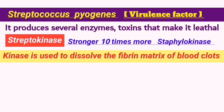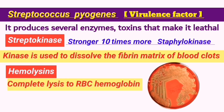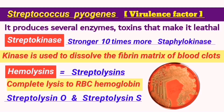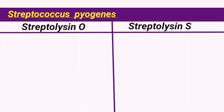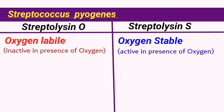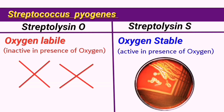S. pyogenes also resembles Staph aureus in producing haemolysins which break down erythrocytes and appear as clear zones surrounding the areas of colony growth on blood agar. S. pyogenes also produces other lysins known as streptolysins which can break down other cells as well as red blood cells. There are two distinct types: streptolysin O and streptolysin S. Streptolysin O is oxygen labile, meaning it is inactive and breaks down in the presence of oxygen. This contrasts with streptolysin S which is oxygen stable, meaning it is not affected by the presence of oxygen.